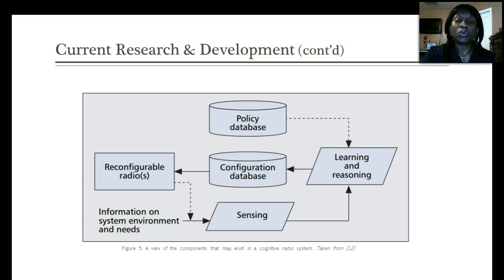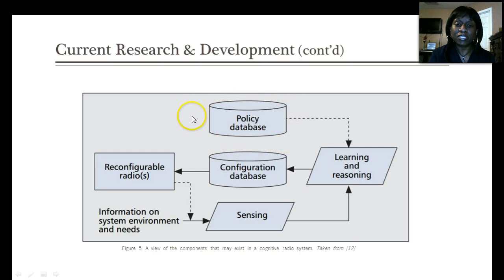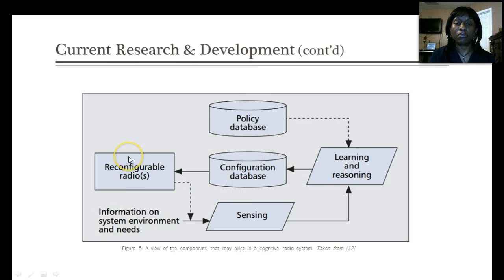During research on cognitive radio systems, designers have envisioned what a cognitive radio system might look like. Here is a graphical depiction showing the different components of what a cognitive radio system might be composed of — for example, a policy database component, a learning and reasoning component, a sensing component, a configuration database component, as well as reconfigurable radios.